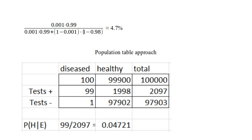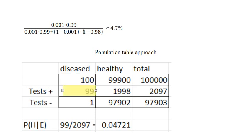I've used words that are easier to understand: 'diseased' and 'healthy' instead of H's, and 'tests positive' and 'tests negative' instead of E's and not E's. We start with 100,000 people total. Using the background rate — one in a thousand people is diseased — that gives us 100 people with the disease. The complement gives us 99,900 healthy people. The test is 99% accurate: among those 100 with the disease, 99% of the time it will tell them they have it, so 99 test positive. One percent of the time it returns a false negative, so one person with the disease is missed.